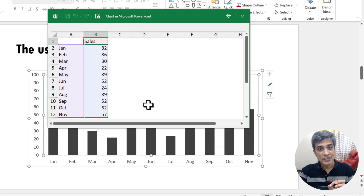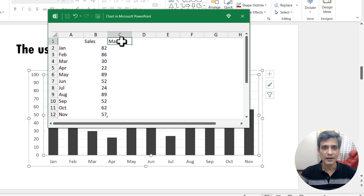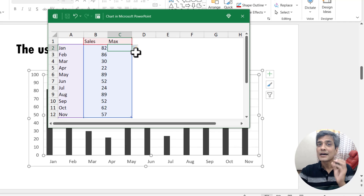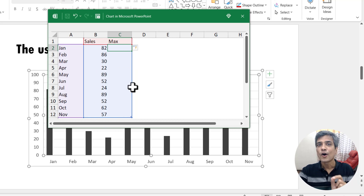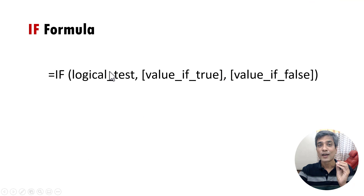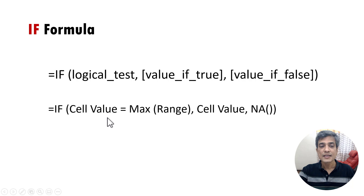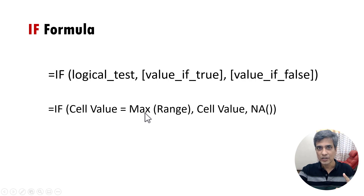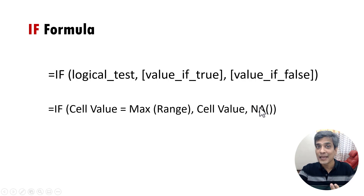Now I'm going to add an additional series called Max series, with the title 'Max'. I'm going to add a simple formula that allows us to pick the maximum value from this range. The IF formula is one of the most important formulas in Excel. The way the IF formula works is: there is a logical test, then you say what happens if the value is true and what happens if the value is false. In our case, the logical test is: is the selected cell value the maximum in the given range? If it is, enter the cell value. If not, enter not available.